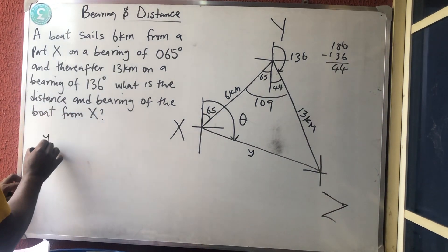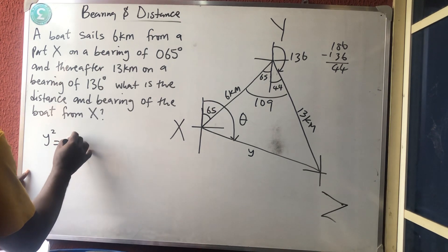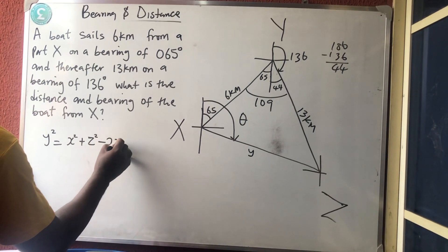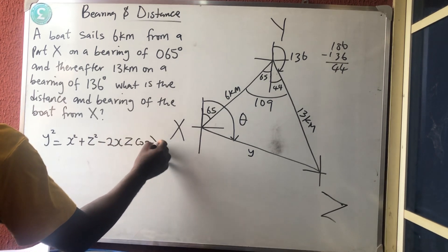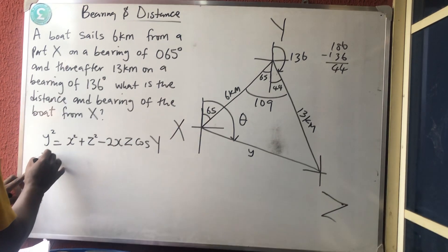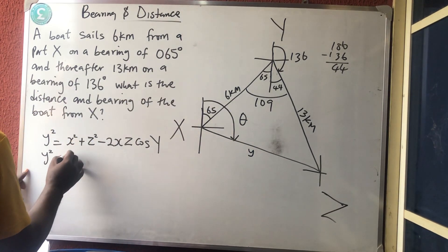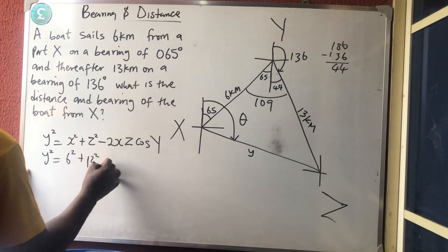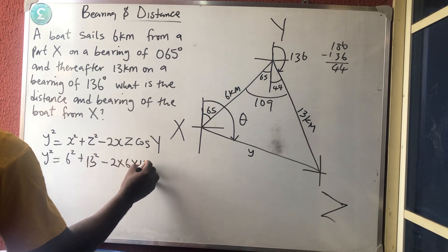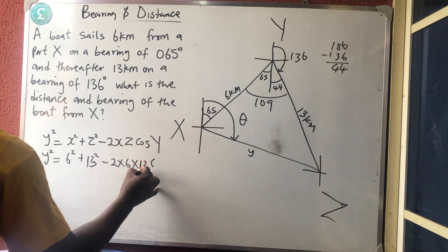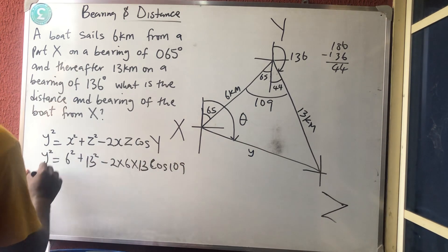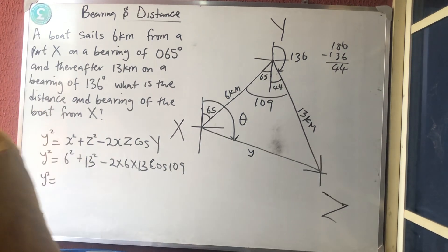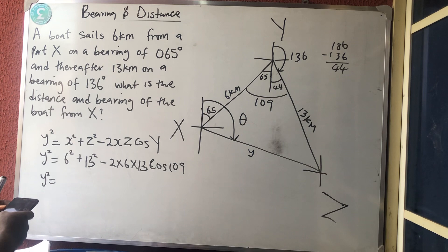So the distance is small y. We'll say that what, small y squared is equal to x squared plus z squared minus 2xz cos θ. Which is what? y² = 6² + 13² - 2(6)(13)cos 109°.